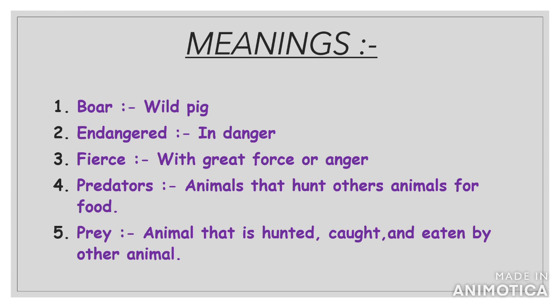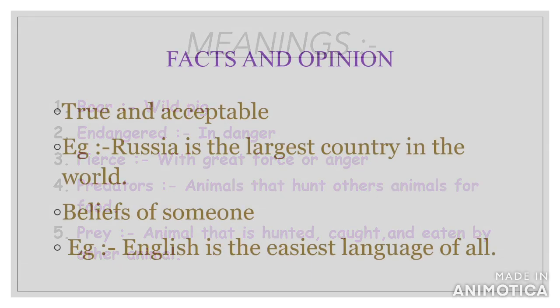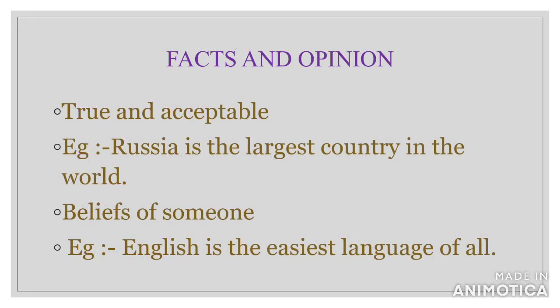The prey animals in this block are deer and boar, and the endangered species is the tiger. Now here is an interesting topic — facts and opinions. Facts are something which is true and acceptable. For example, Russia is the largest country in the world. Opinions are beliefs of someone. For example, English is the easiest language of all.